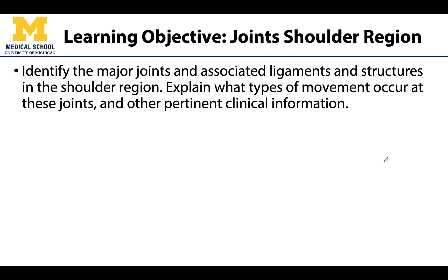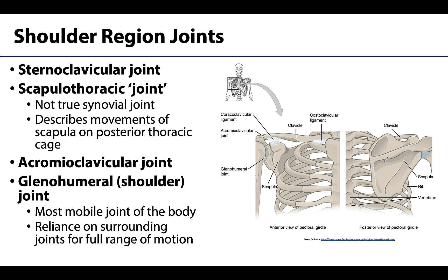There is more than just one joint of interest in this region, and we will discuss specifics regarding these four joints or joint-like things. There are four joints or joint-like entities located in or affecting the shoulder region. When someone refers to the shoulder joint they are referring to the glenohumeral, sometimes just called the shoulder joint. This is the most mobile joint in the body, but there is reliance on movement in the other three joints in order to reach that full range of motion at the glenohumeral.